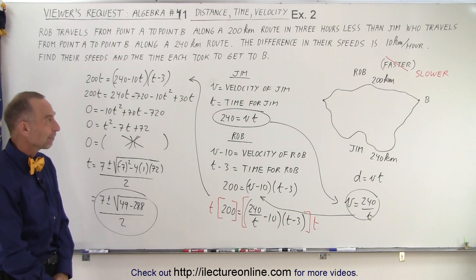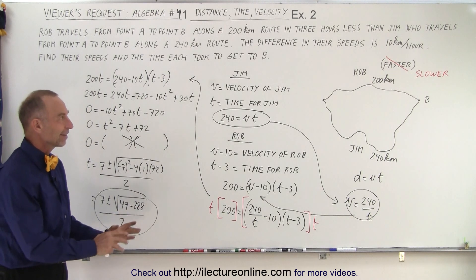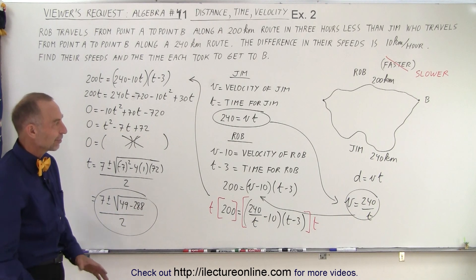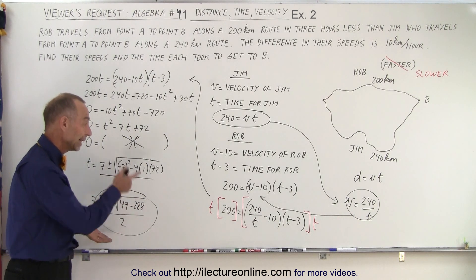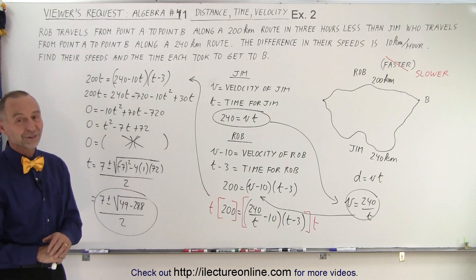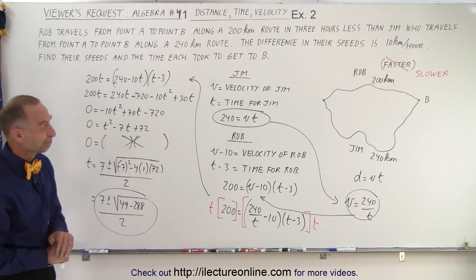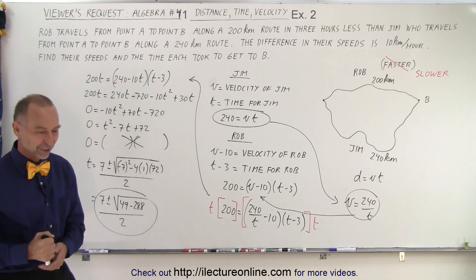Then there's no solution. So definitely guessing the right one is the way to go. It seemed to make sense that Rob had to be faster, but even if you guess the slower one, you end up with the wrong result. You can't solve the problem, and that way you go back and then change your assumption that Rob must be faster. Alright, that's how it's done. Good problem.